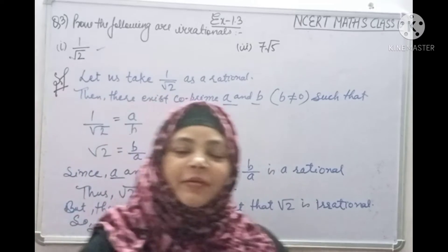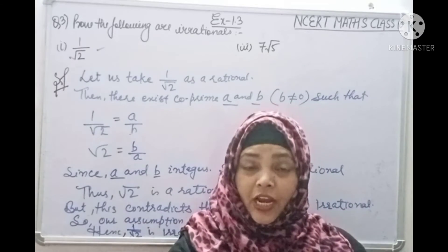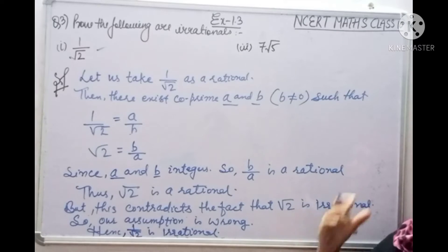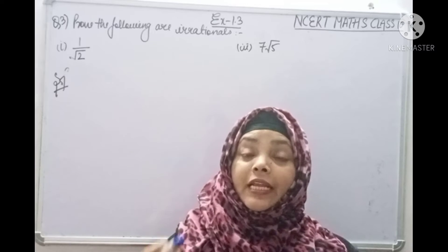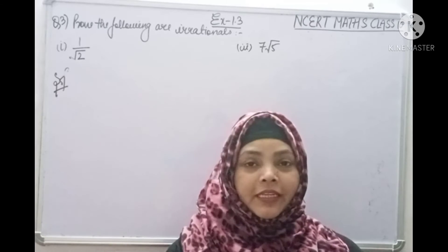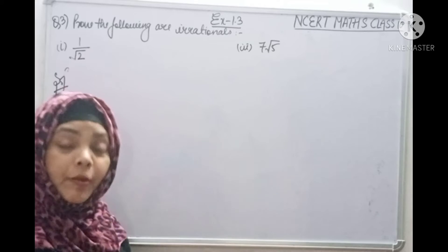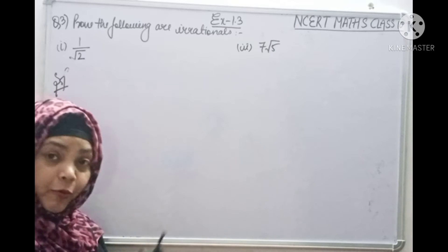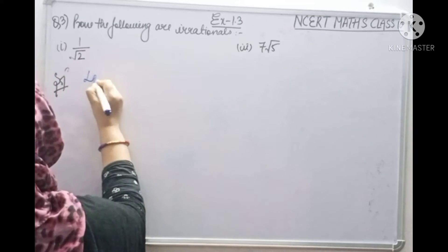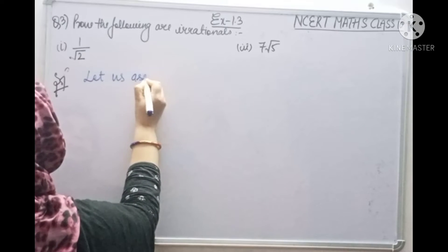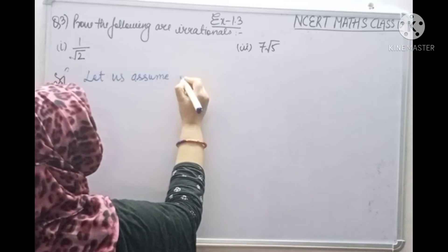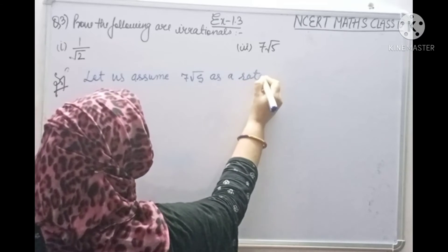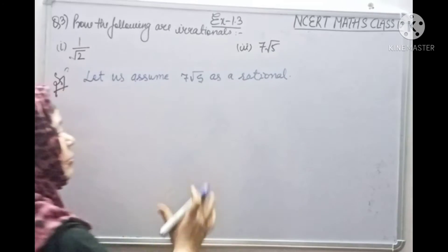Understood? With this example you will understand how to apply the same method. Now let's see the next part — let us assume or take 7 root 5 as a rational, we suppose it is rational.